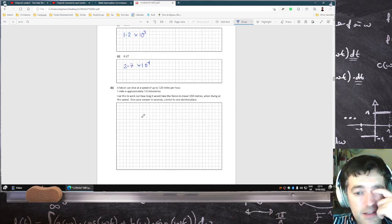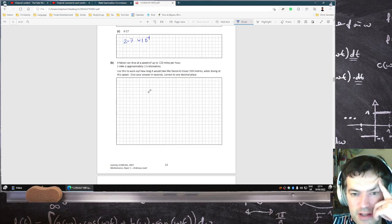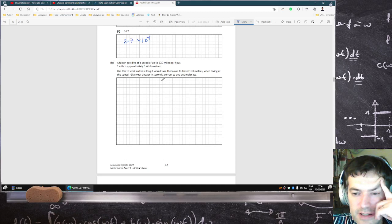A falcon can drive at a speed of 120 miles per hour. Use this to work out how long it takes the falcon to travel 100 meters. Okay, one mile, okay fine.